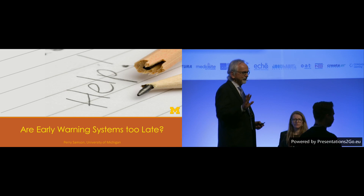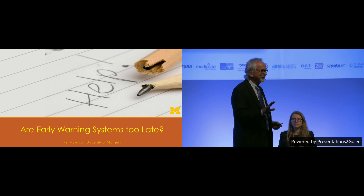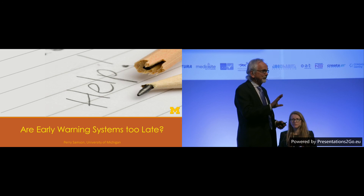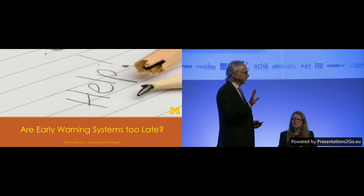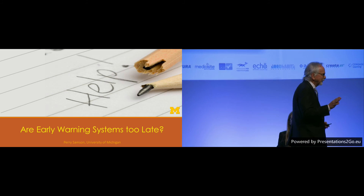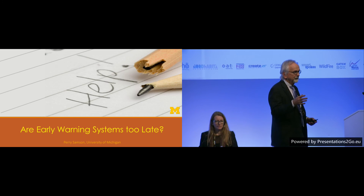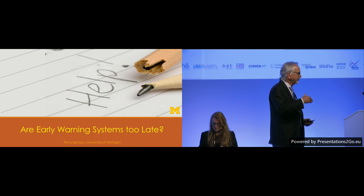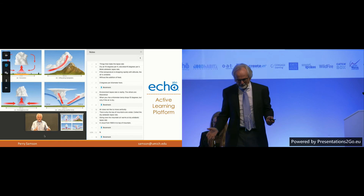I tell my students on the first day that I'm going to put a probe in them — I'm going to measure everything they do this semester. If they're uncomfortable with that, they might want to take a different course. Or they can also opt out, in which case I don't collect their data. My course, called Extreme Weather, has about 220 students in it. Of those, about five decided not to participate. The rest are comfortable sharing their data.